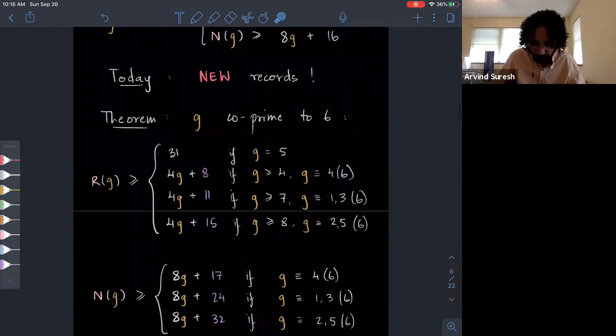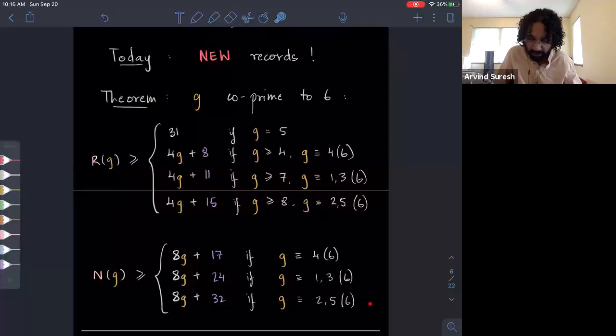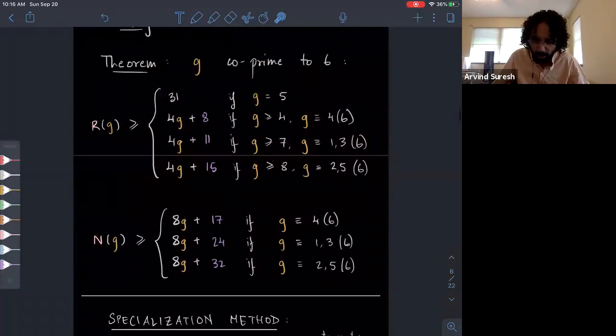The current record for G at least four is due to Shioda, who proves that R of G is at least 4G plus 7, and N of G is at least 8G plus 16. I'm not including the records for G equals one, two, three, because I'm not going to try to break those records in this talk. Today I want to present some new records. Namely, if you take an integer that's co-prime to six, then we can improve Shioda's record to the following. I'll just leave this here for just a second to take it in. The best case happens when we have genera that are congruent to two or five mod six, in which case we can get rank at least 4G plus 15, and at least 8G plus 32 Q points. This is 4G plus 11 if it's one or three mod six, 8G plus 24. And then if it's four mod six, we get 4G plus 8 rank and 8G plus 17 rational points.